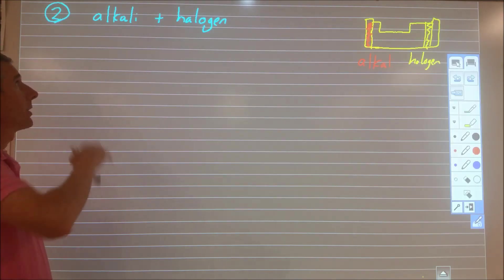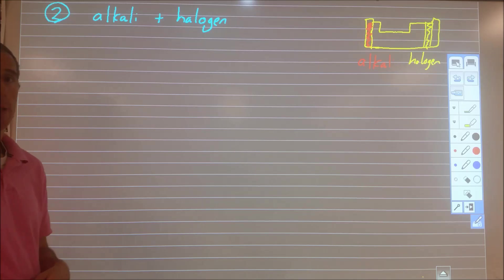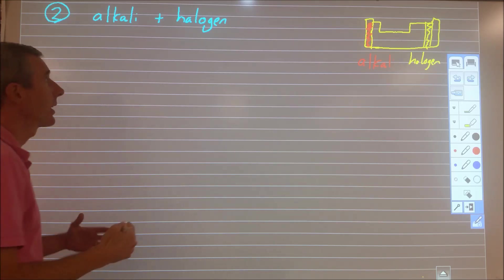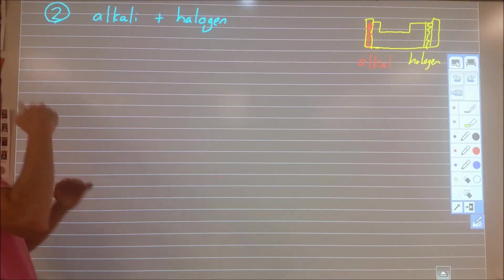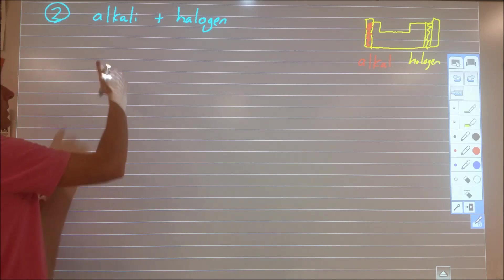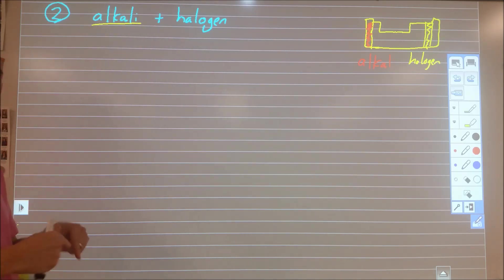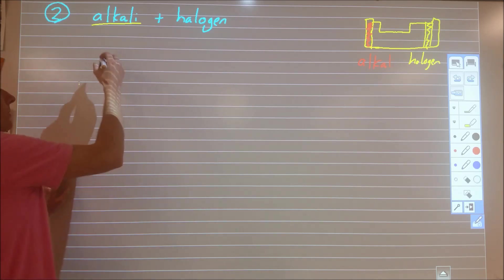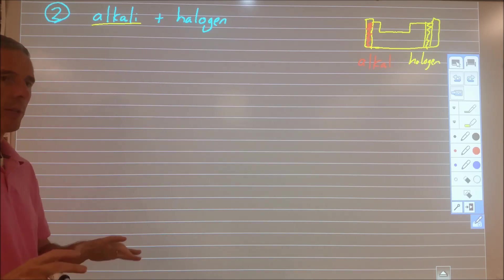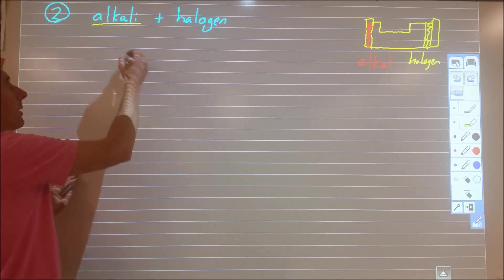So our second type of reaction is an alkali metal reacting with a halogen. And the key thing I would stress to you here is that at the top end level, at the level of a six or a seven in IB, you want to have a solid understanding that the thing that makes alkali metals reactive is that they have a very weak hold on electrons. One of the big themes of trends is that some things are really good at pulling on electrons, and other things are really bad at pulling on electrons.